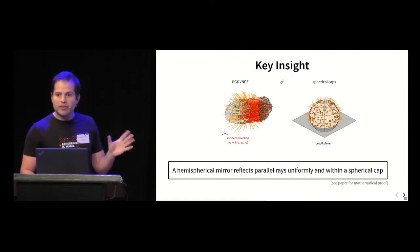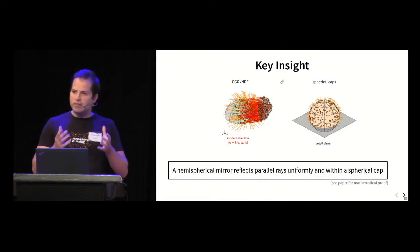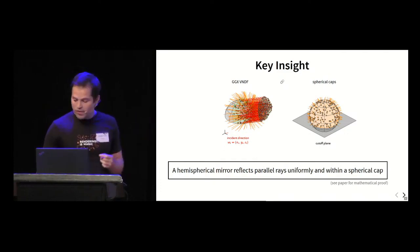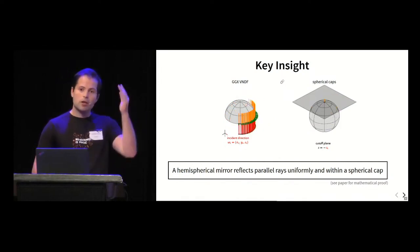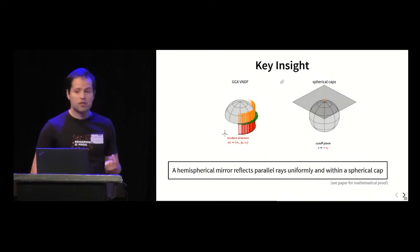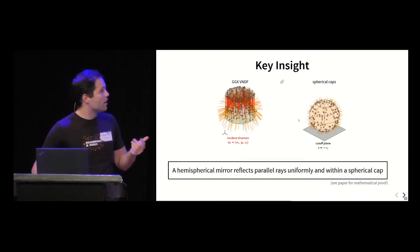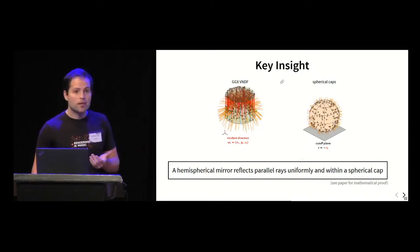In the paper we show two things. A hemispherical mirror reflects parallel rays uniformly and within a spherical cap. I have an entire proof in the paper by using Jacobians, but intuitively for the uniform part it's known that if you look into a spherical mirror the incident rays will be reflected uniformly, and since the hemisphere is a restriction of the sphere then it's obviously uniform too. For the spherical cap section, the plane that cuts off the sphere is completely determined by the elevation of the incident direction. If we change the incident direction, the plane is going to move. Up to this limit case where you're looking at the hemisphere from above and you only have some directions that go straight up, that's a Dirac distribution. And conversely if you go upwards to the upward direction you cover the entire sphere and you're sampling the sphere uniformly.